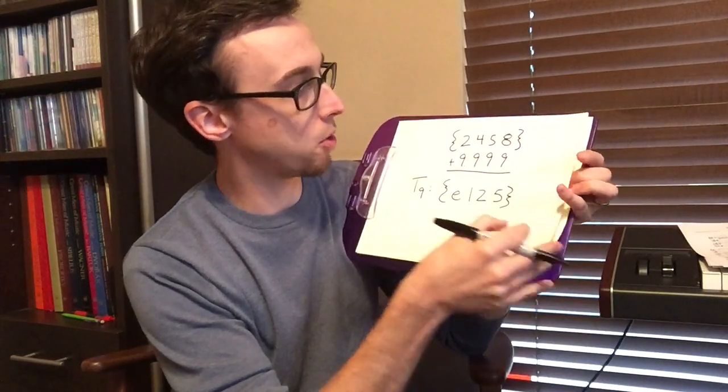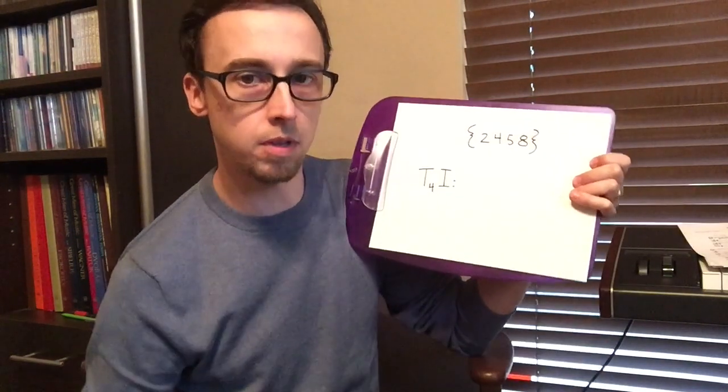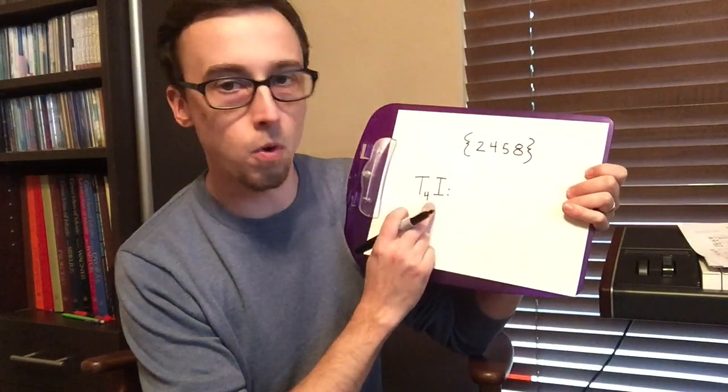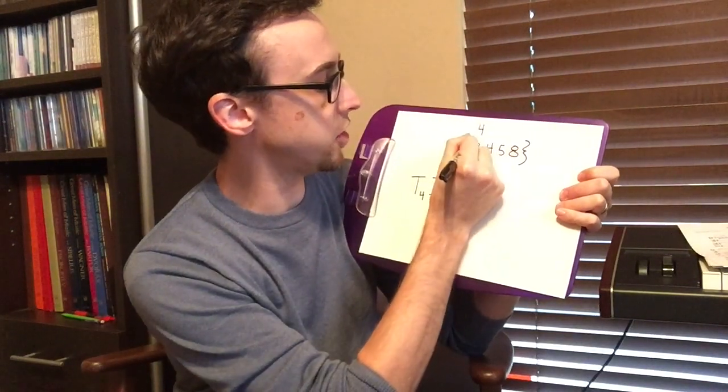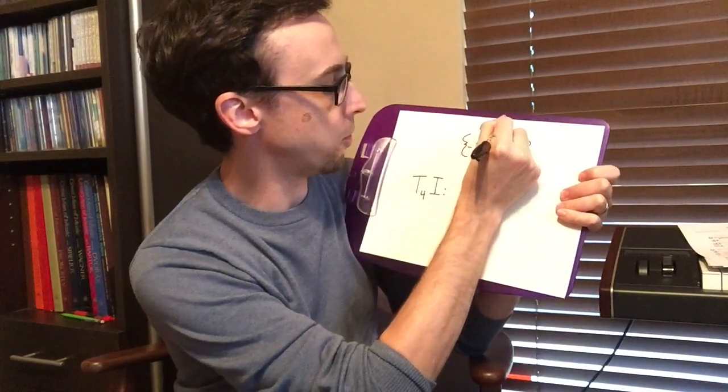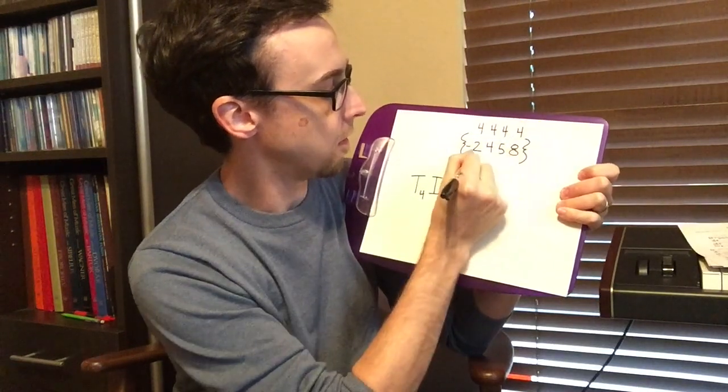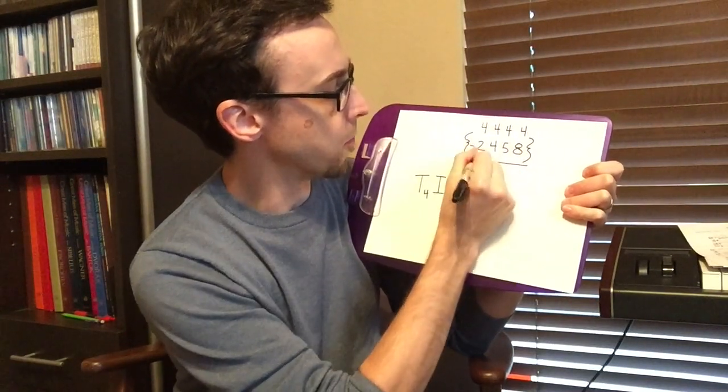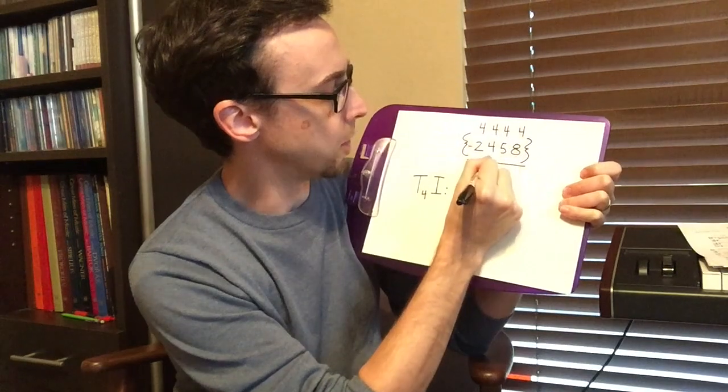If we're dealing with a transposed inversion we're going to be looking at something that looks like this: T4I. So when we're figuring that out we want to take our index number and we're going to subtract each of these integers from whatever our index number is. So 4 minus 2 is 2, 4 minus 4 is 0.